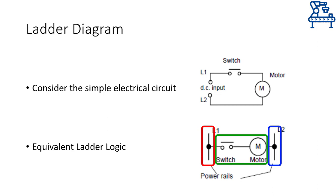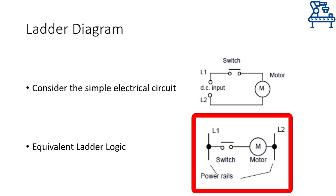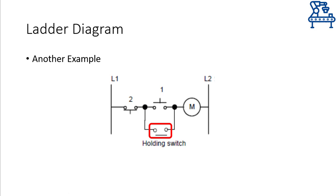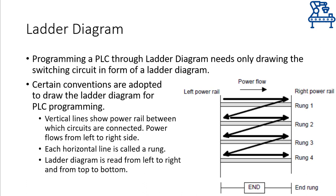In between the power rails, different components are attached. It is conventional to use inputs on the left side and outputs on the right side. A single horizontal line containing various components is called a rung. This is the simplest ladder logic diagram you can make — congratulations, you have made your first ladder diagram. As another example, consider this ladder diagram: pressing a latching switch S1 will turn on the motor, but if normally closed switch S2 is pressed, it will disconnect power to the motor. A holding switch connected in parallel to S1 will turn the motor on and off when held or released. To program a PLC using ladder diagrams, only the ladder diagram is needed.